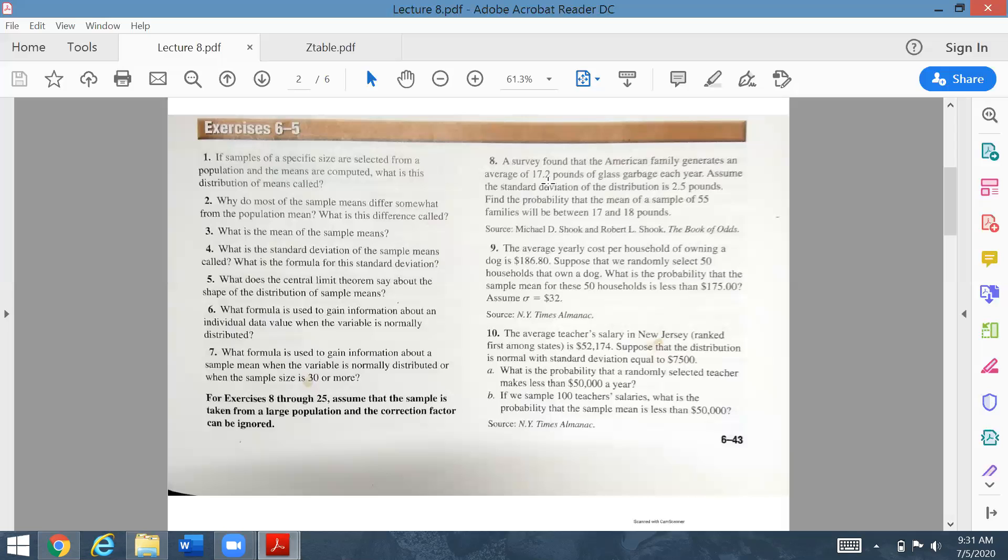You have to decide which is the appropriate symbol for this particular value. 17.2 is the average of the population, denoted by mu. This is the value of mu, and 2.5 is the value of sigma. The sample size of 55 families will be between 17 and 18 pounds. Your area is lying between these two values. You are to express your values in z values, z1 and z2.